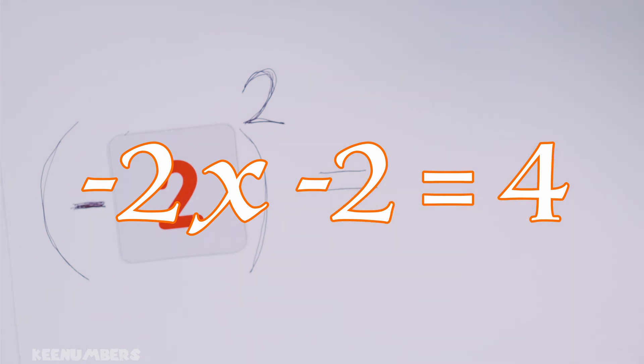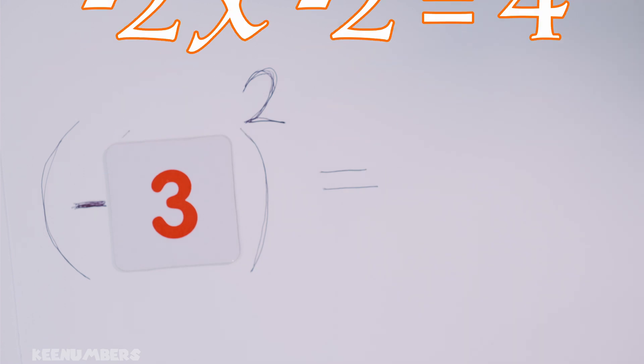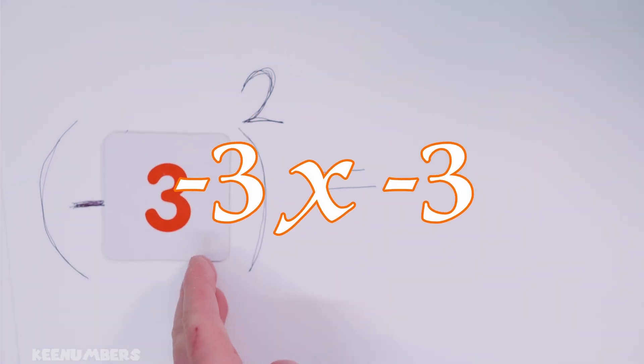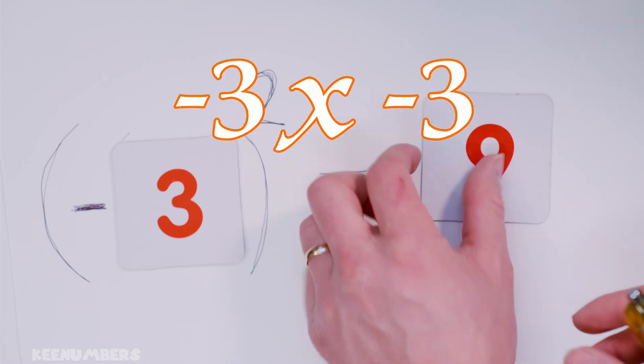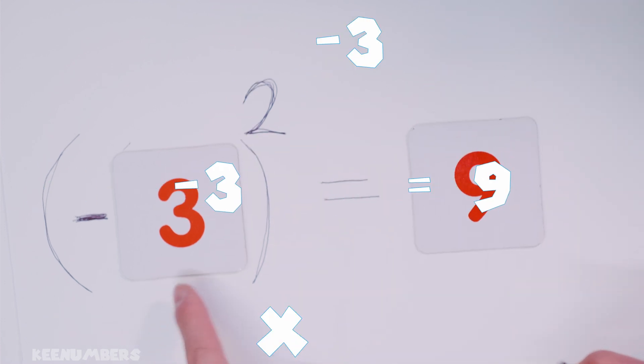Meanwhile, negative three squared. Again, a negative number times a negative number makes it positive. And we know that three by three is good old-fashioned nine. So negative three squared is nine.